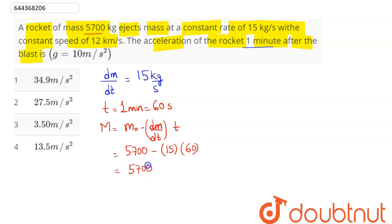So this calculation comes to be 5700 minus 900 which comes out as 4800 kg. We can say that the remaining mass here is 4800 kg.